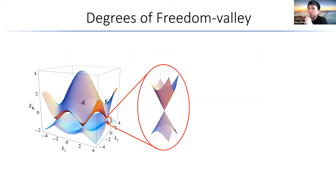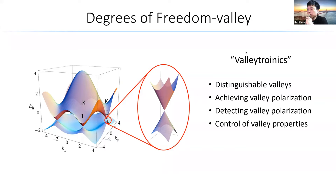We also have magnetic tunnel junctions that are used for modern MRAM storage devices. Another degree of freedom that we're trying to utilize is called valley. Here I'm showing a band structure of graphene, and in there we see two valleys—the conduction band minimum and the valence band maximum—which exist at the K point and minus K point. If we name them as zero and one, we could use this to encode information. Key aspects of valleytronics are that we need distinguishable valleys, the ability to achieve valley polarization, detect valley polarization, and control valley properties.